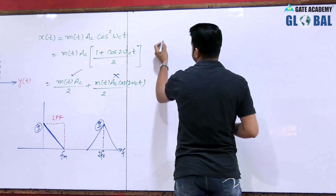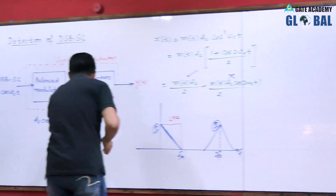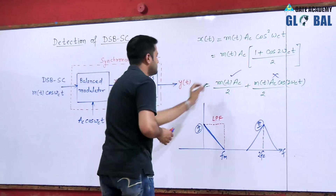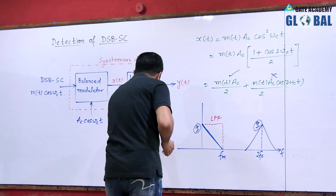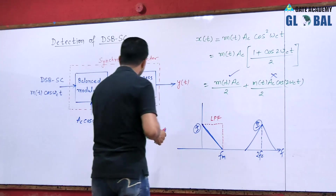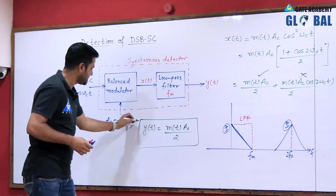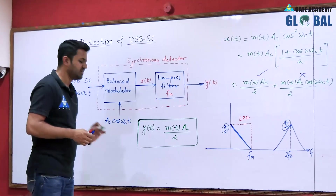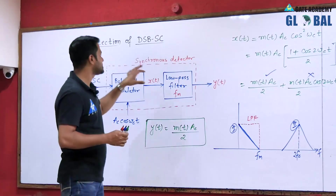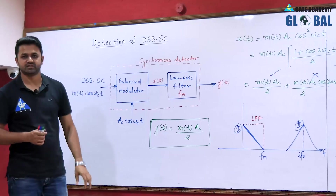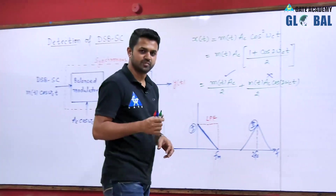At the output of the low pass filter we get y(t) = m(t)·AC/2. In this way we have recovered our message signal. This output contains only frequency FM and m(t) is directly present. So we can say that the synchronous detector can demodulate the double sideband suppressed carrier signal to give the message signal back.